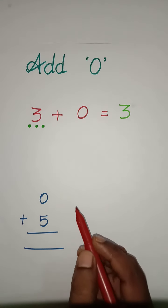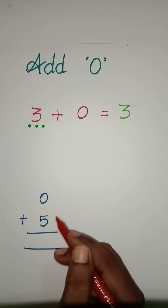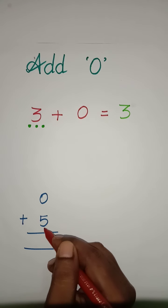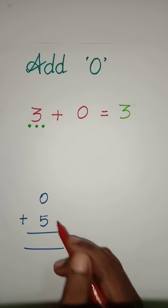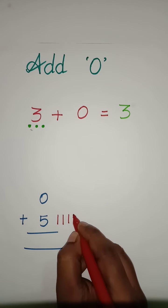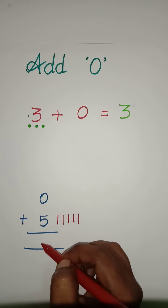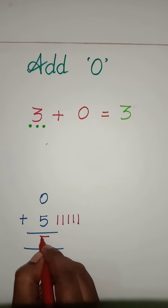Come to next example. What number is it? 0. 0 means no value. So, come to next one. What number is it? 5. So, 5 lines. 1, 2, 3, 4, 5. So, 0 plus 5 equals 5. Answer is 5.